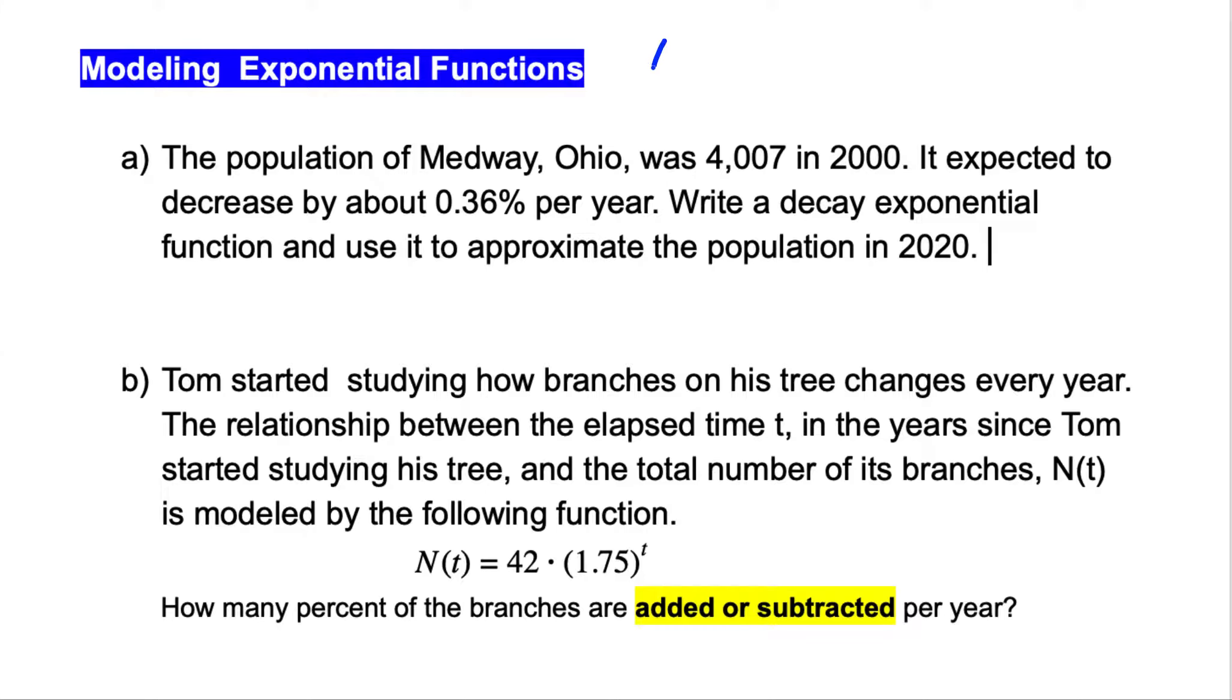Let's see first the formula for the exponential decay model. We already know this from previous video. A of t was equal with the initial value, which is 4,007, times 1 minus R.